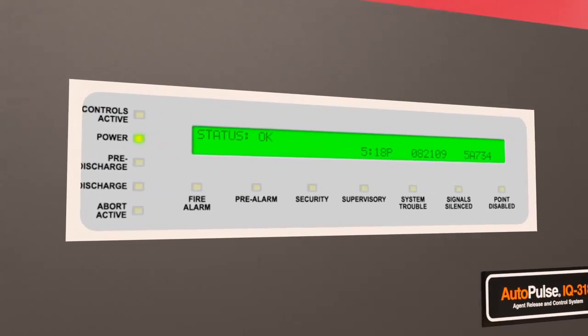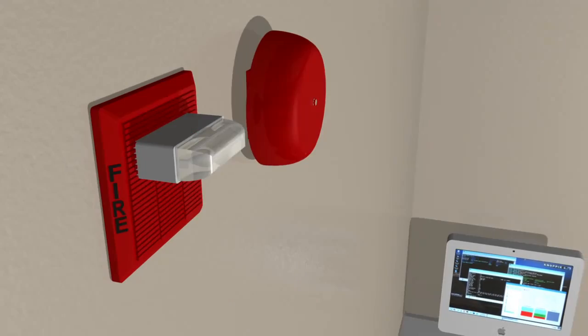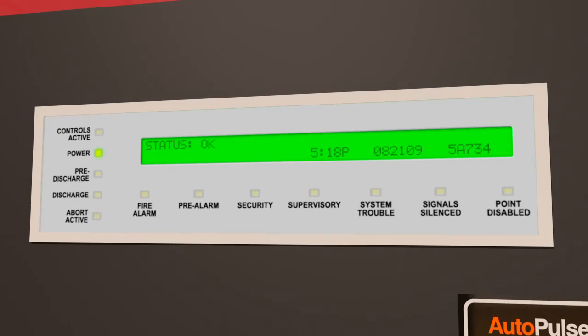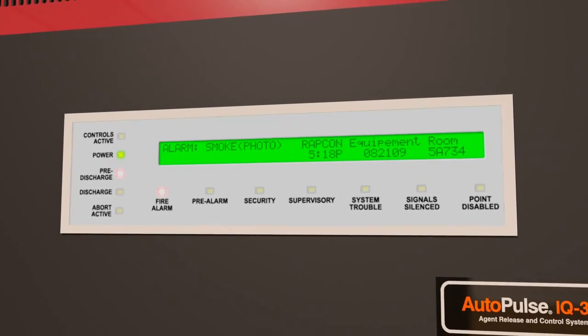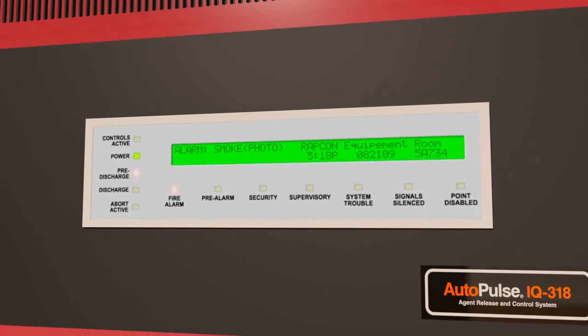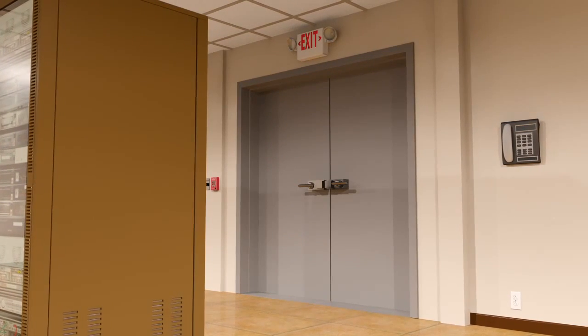Designed to monitor fixed fire hazards, the auto pulse control panel initiates audio and visual alarms throughout the protected area. The auto pulse control panel can also trigger a series of pre-programmed critical actions, like the closing of entryway doors, dampers, or shutting down electrical equipment.